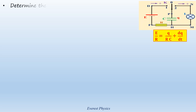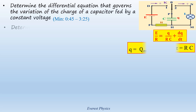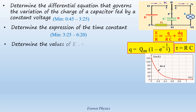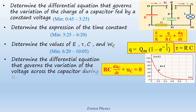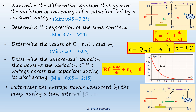In this video, we are going to determine the differential equation that governs the variation of the charge of a capacitor fed by a constant voltage, determine the expression of the time constant, determine the values of E, tau, C, and Wc, determine the differential equation that governs the variation of the voltage across the capacitor during its discharging, and determine the average power consumed by the lamp during a time interval 0 to T1.